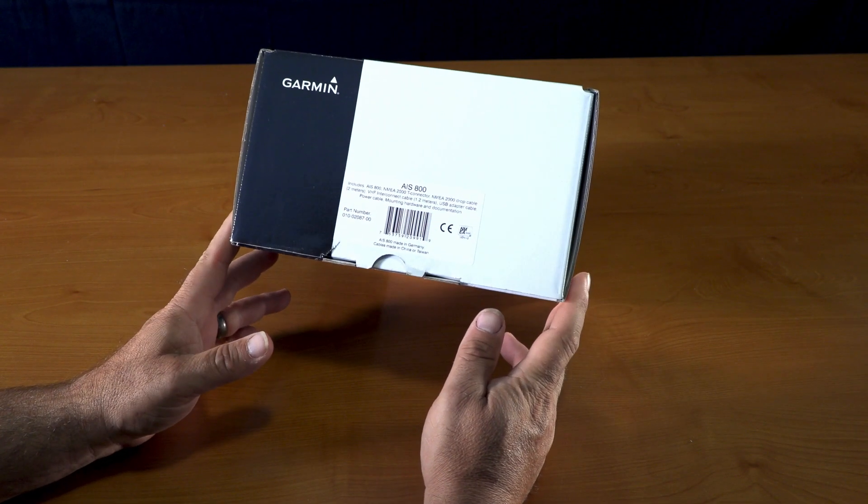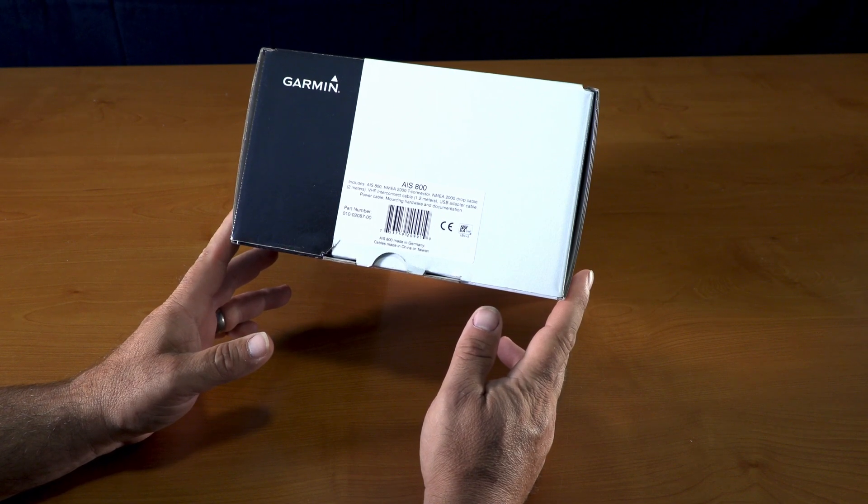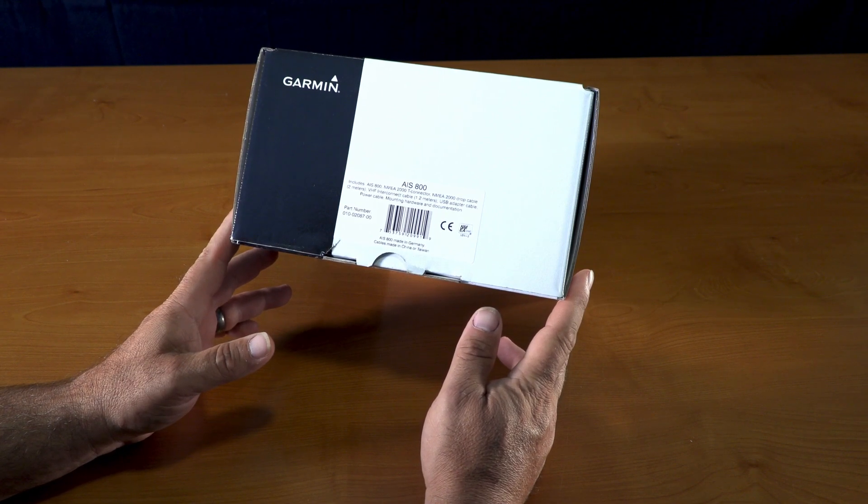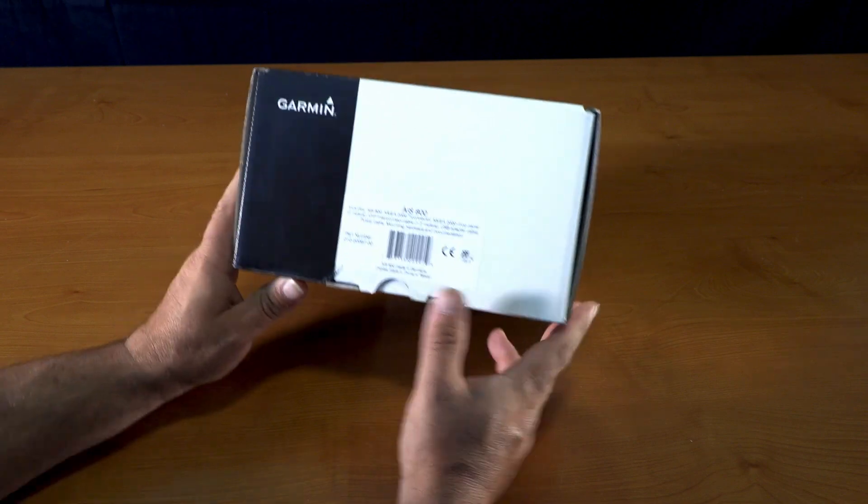Hey guys, this is the unboxing of Garmin's AIS 800. This is Garmin's part number 010-02087-00.